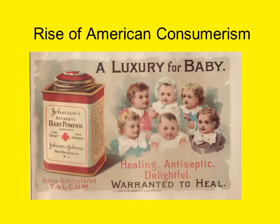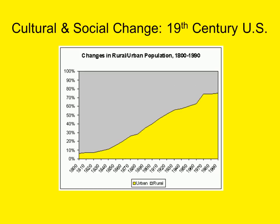Even simple products such as baby powder, as pictured in the 1894 advertisement on this slide, became goods that could be aggressively marketed in ways that appealed to a growing American consumer culture. The United States, over the course of the 19th century, moved from a producer economy based on hard work and frugality to a consumer economy in which material wealth and leisure activities became intertwined with identity.